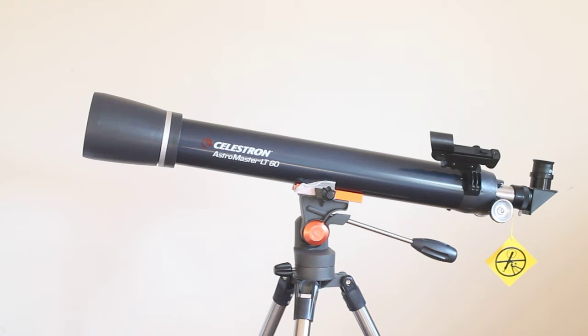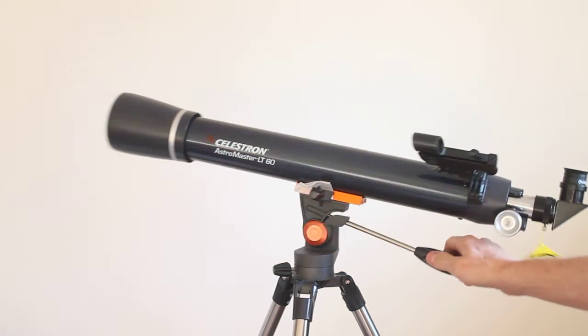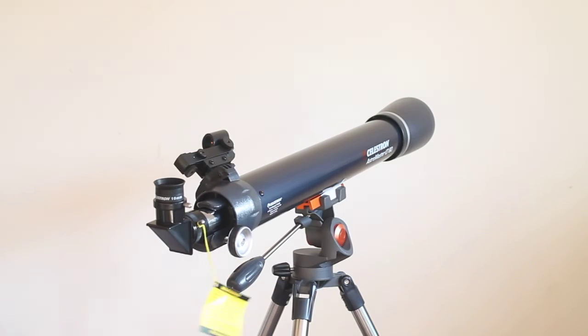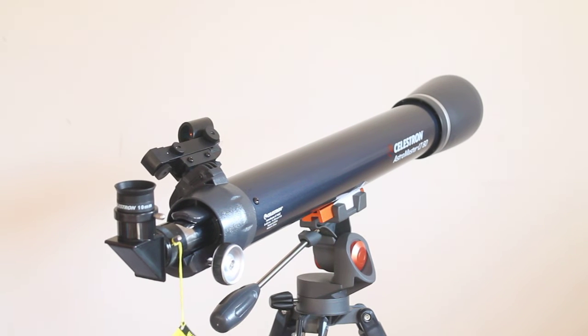Now anybody that does astronomy quite a lot will tell you that something like f/10 or f/12 is perfect for planetary observations or lunar. Let's not get too carried away with the planetary observations with such a small telescope—maybe something like the Astromaster 90 if you're serious about a Celestron Astromaster refractor.